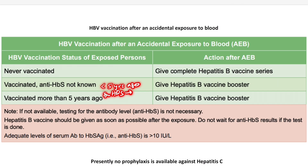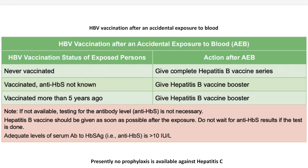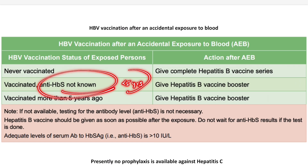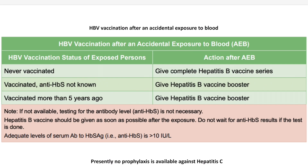If vaccinated and the anti-HBs status is known, and vaccination was less than five years ago with anti-HBs levels more than 10 international units per liter, there is no need for a booster dose. If the status is unknown even with vaccination less than five years ago, give a booster dose. If vaccinated more than five years ago, you do not need to check anti-HBs levels — just give a vaccine booster dose.